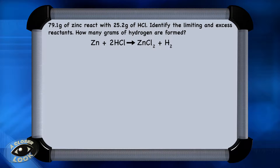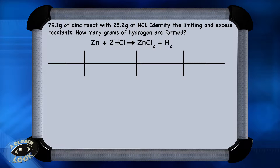First, identify the limiting and excess reactants. Then, determine how many grams of product — in this case hydrogen — are formed by the limiting reactant. Let's run the two calculations to see how much hydrogen gas can be formed by each reactant. Let's figure out how much hydrogen can be produced from 79.1 grams of zinc, according to the balanced equation which represents this reaction.